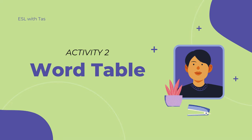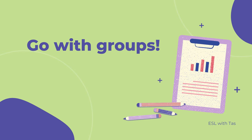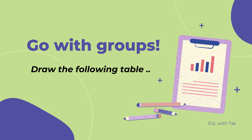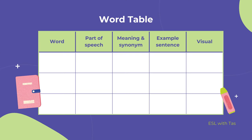The other activity is the word table. Put your students into groups and ask each group to draw the following table. On this table, we have: the word, part of speech, meaning, synonym, example sentence, and finally, visual. I just want to note that you don't have to use all of them — drop or even add any category as it serves your lesson.